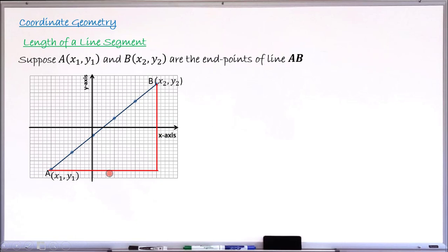To use the theorem I need the lengths of the two other sides. The horizontal side equals x₂ minus x₁ — that is, the x-coordinate of B minus the x-coordinate of A. Similarly, the vertical side equals y₂ minus y₁, the y-coordinate of B minus the y-coordinate of A. Now I have two sides and need to find the hypotenuse.